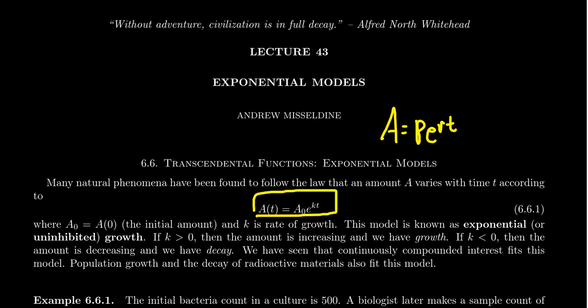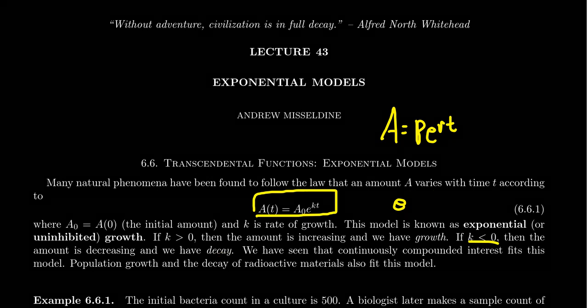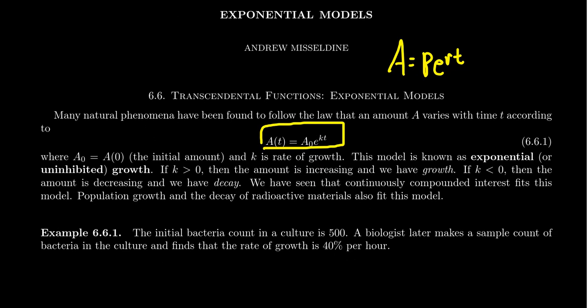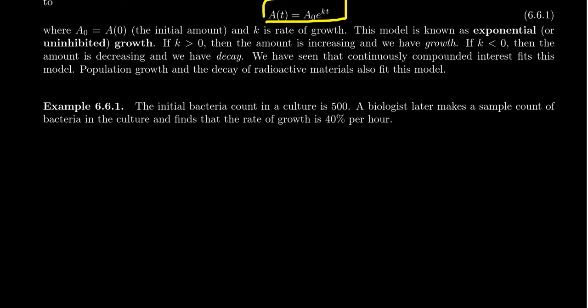When you have this expression e to the k, if k is a positive number, that means e to the k will be a base greater than one, and therefore it will represent a growth model when k is positive. On the other hand, when k is negative, you're actually taking e to a negative power, which gives you a reciprocal. Your exponential will have a base less than one, and that causes it to be a decay model. So when k is positive, this means growth. When k is negative, this means decay. We'll see that if you have a hot object and you put it in a cold environment, the temperature actually will decay over time. We'll also see the idea of radioactive decay, that the mass of an object goes down over time as atoms fall apart with the radiation.